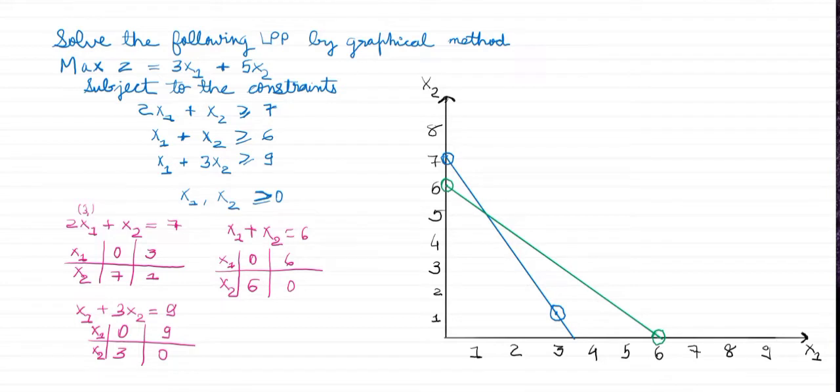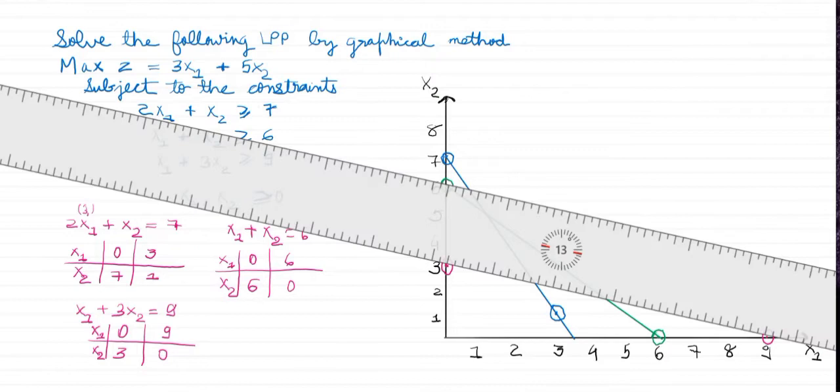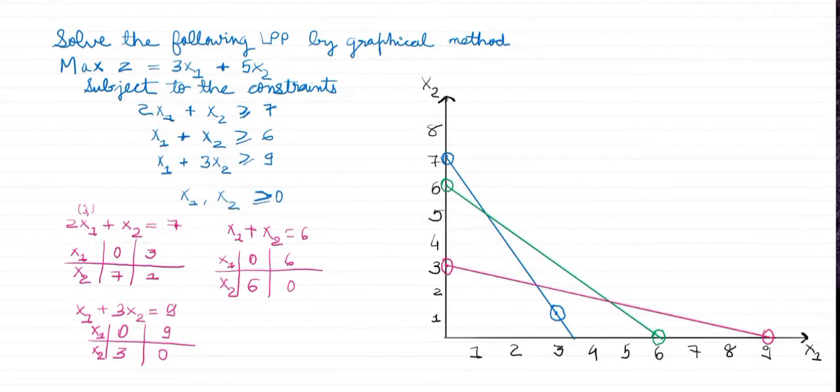Then we'll plot the third. That is, here it is 0, 3 and here it will be 9, 0. And then join this using a straight line. Then we'll label all these lines using 1, 2 and 3 for labeling. Now 1 is for the equation 2x1 plus x2 equals 7. Then second one is for x1 plus x2 equals 6. And the third one is for x1 plus 3x2 equals 9.